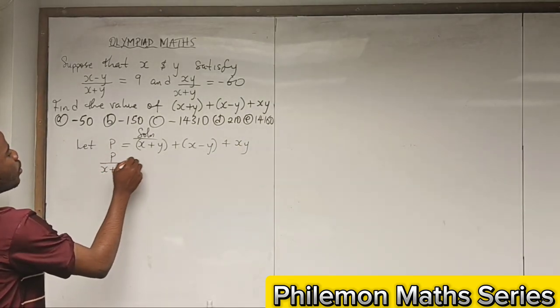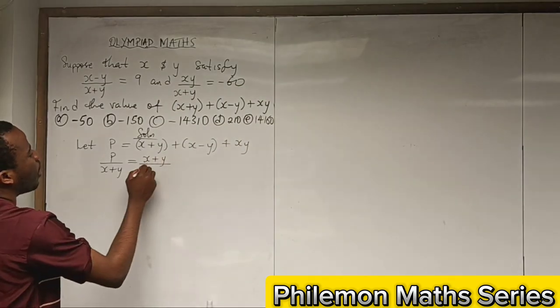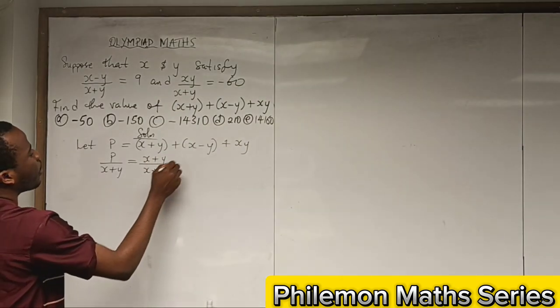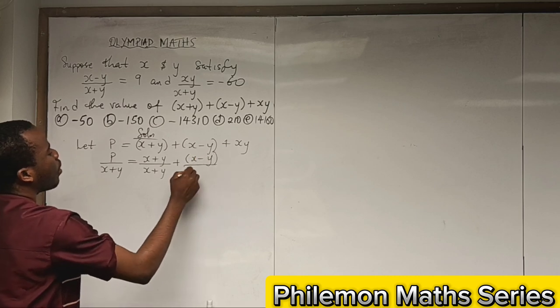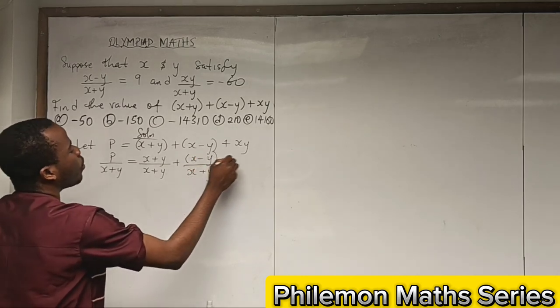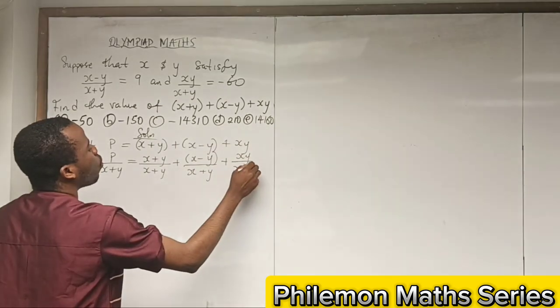So we have P/(x + y) = (x + y)/(x + y) + (x - y)/(x + y) + xy/(x + y).